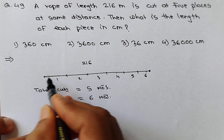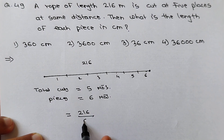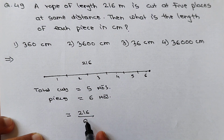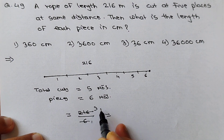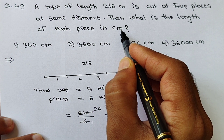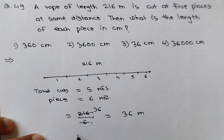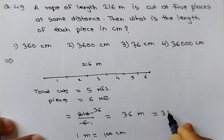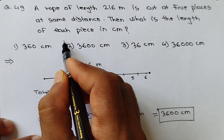Though cuts are 5, total pieces are 6. Per piece length = 216 ÷ 6. Always divide by number of pieces, not cuts. 216 ÷ 6 = 36 meters. But it is asked in centimeters, and length is given in meters. Since 1 meter = 100 cm, the length = 36 × 100 = 3600 cm. Our answer is 3600 — that is the second option.